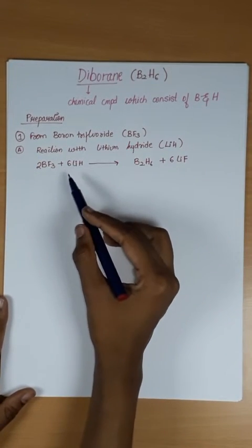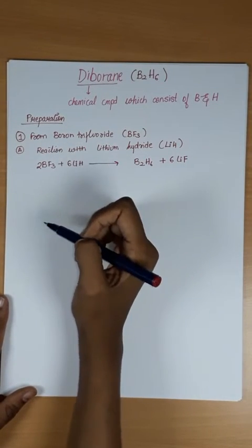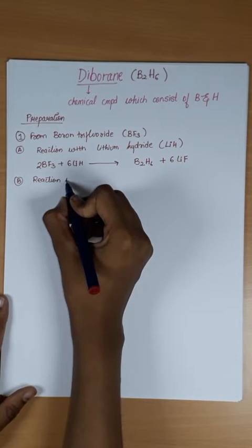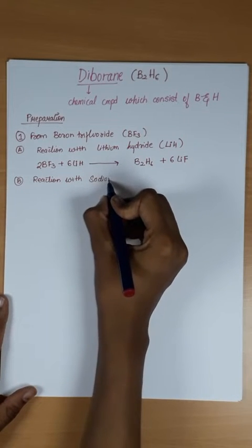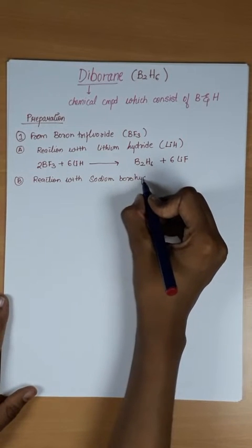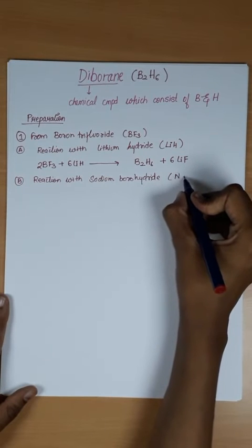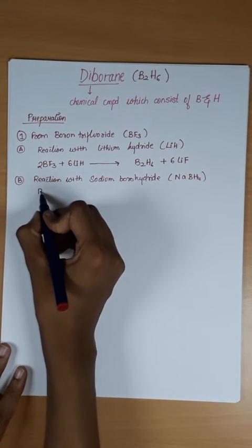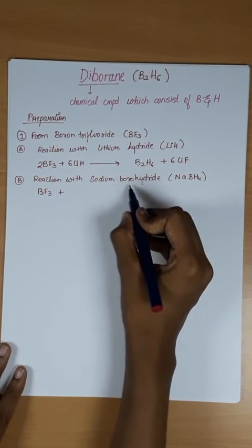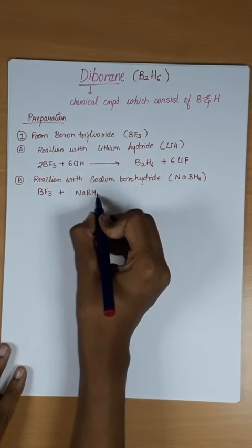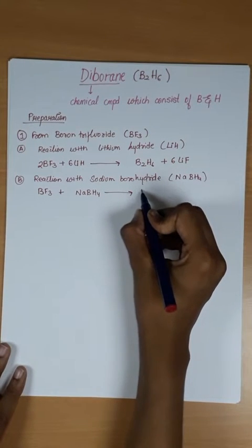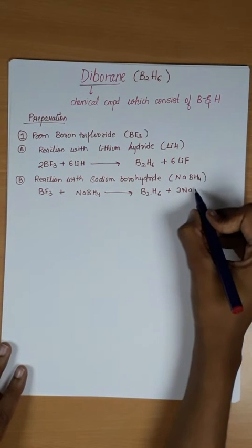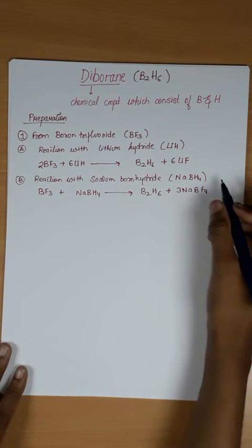This is the first preparation method from boron trifluoride. Now B, reaction with Sodium Borohydride. Formula is NaBH4. Boron trifluoride react with Sodium Borohydride, it will give Diborane and Sodium Borofluoride. Balance the equation.